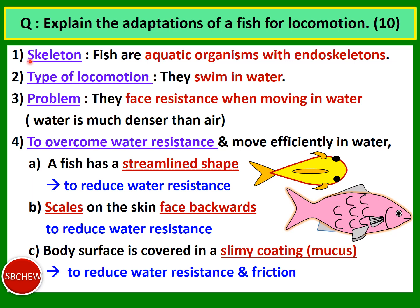The first thing we need to explain is the type of skeleton the fish has. Fish are aquatic organisms with endoskeletons — a type of skeleton that's inside the body, made up of bone or cartilage, and covered by tissues. The mode of locomotion is swimming in water.